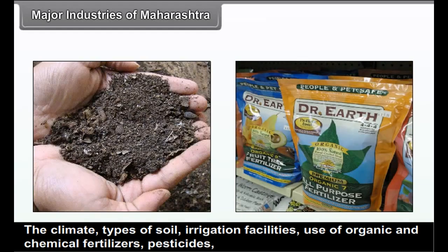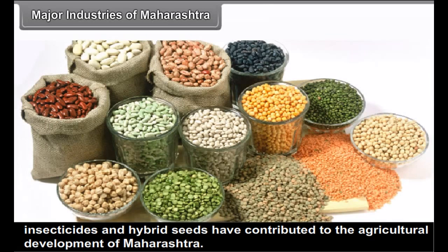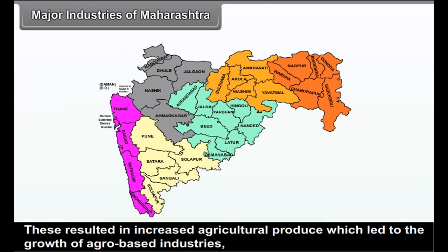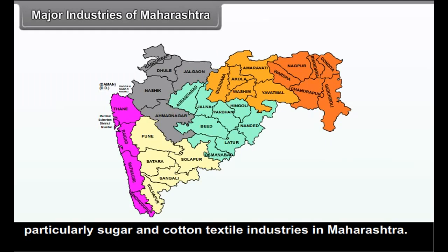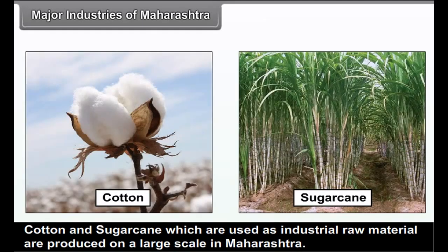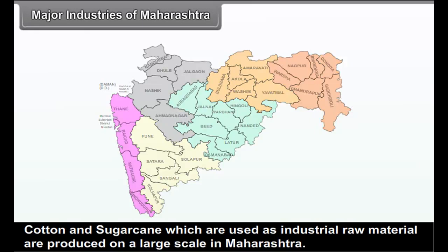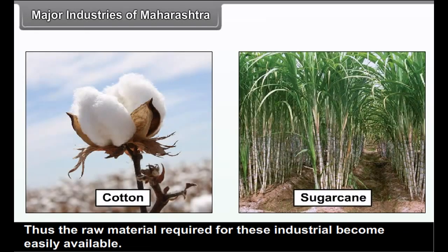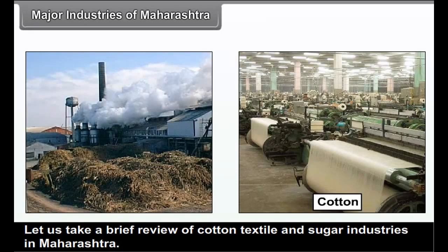Agro-based industries, particularly sugar and cotton textile industries in Maharashtra, use cotton and sugarcane as industrial raw materials, which are produced on a large scale in Maharashtra. Thus, the raw material required for these industries becomes easily available. Let us take a brief review of cotton textile and sugar industries in Maharashtra.